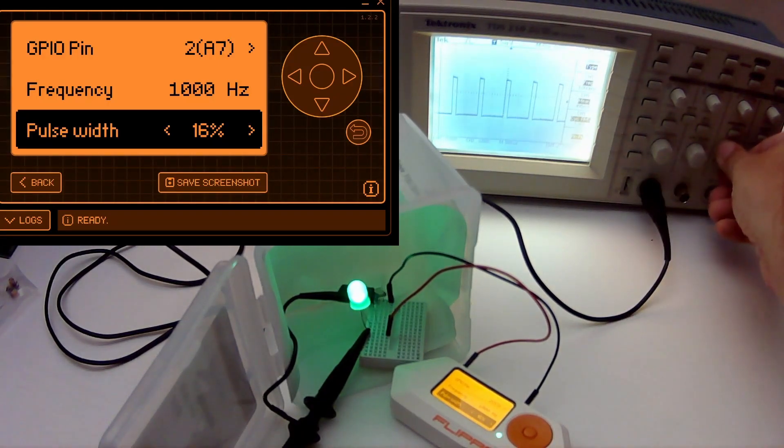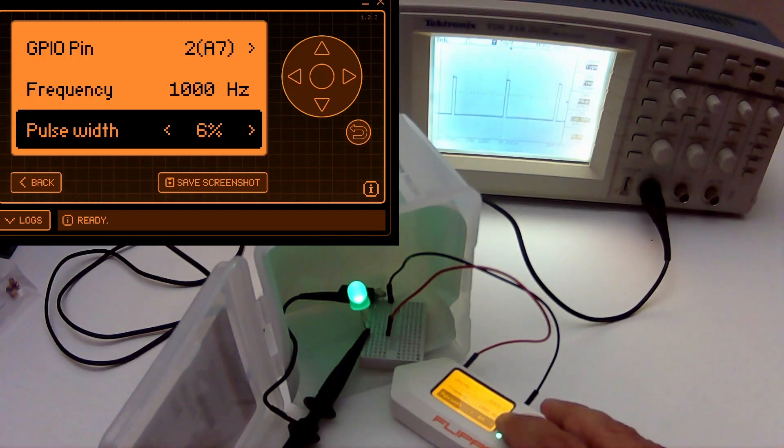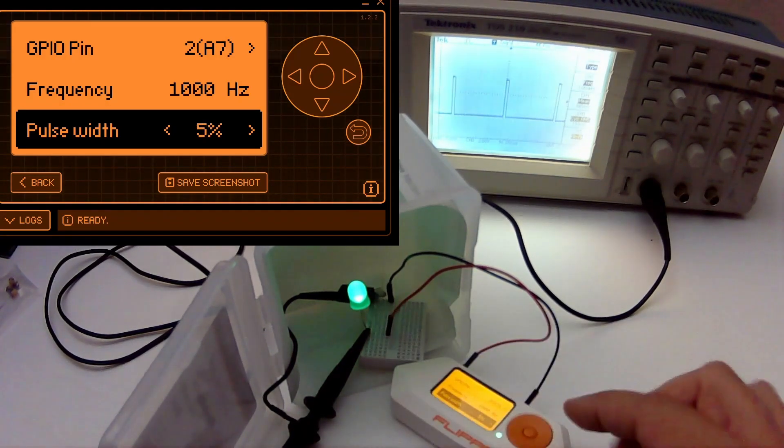I'm going to zoom in one notch so we can see the pulse better. Now I'm going to drop it down to a 10% duty cycle. From here on out almost every time I reduce the pulse width you can see the light getting dimmer.